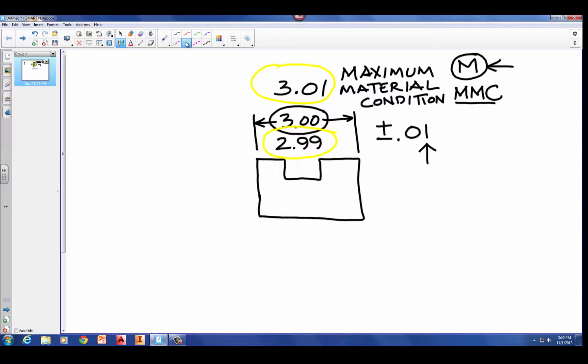When the part is at its smallest size, which in this case, or when the feature is at its smallest size, which is when this feature is at 2.99, we say that it's at its least material condition. I'm just going to abbreviate material, and I'm going to abbreviate condition. And designers refer to this as LMC.